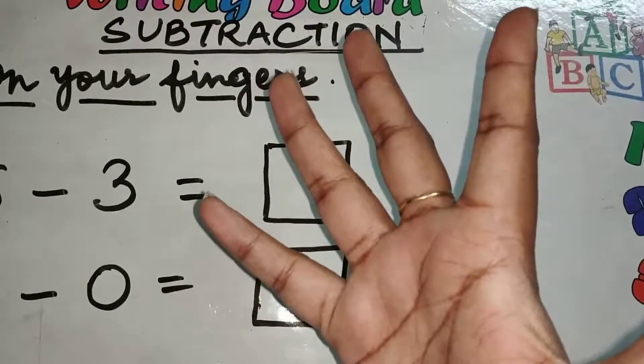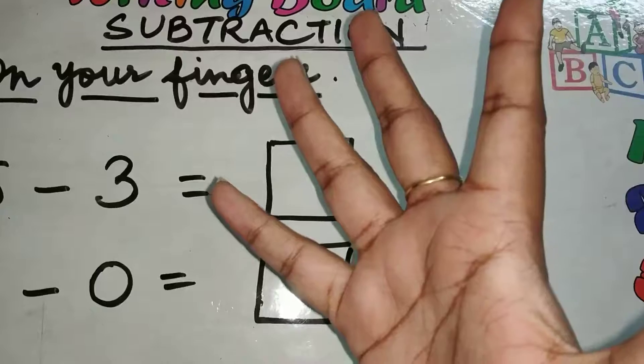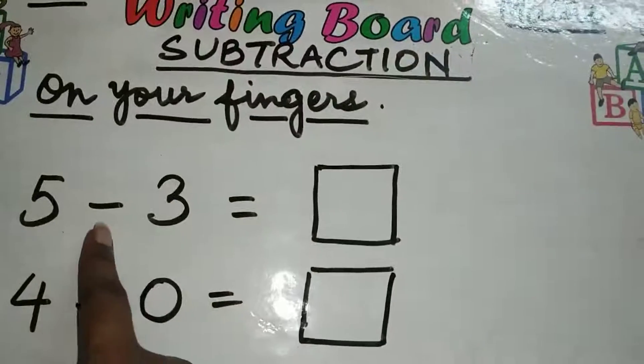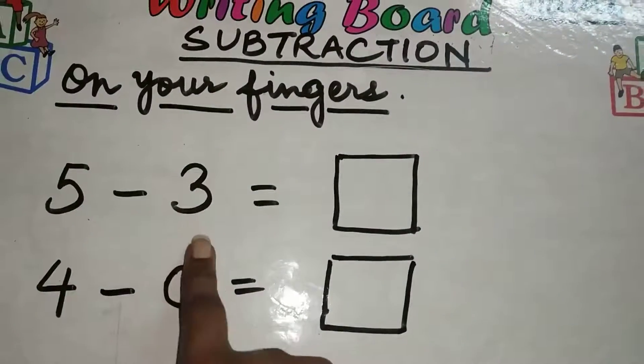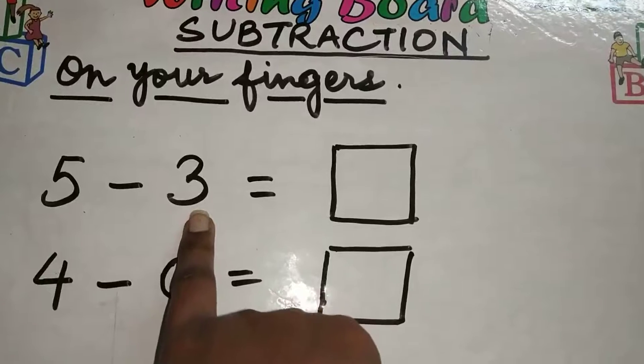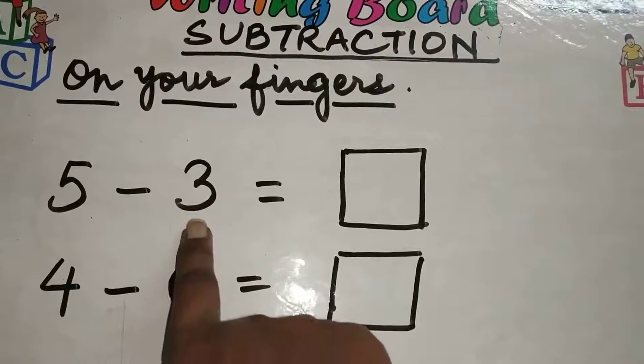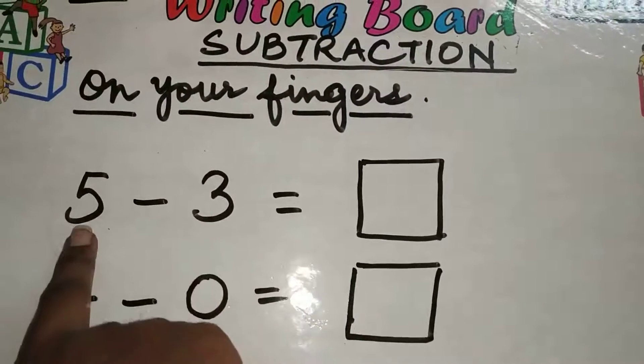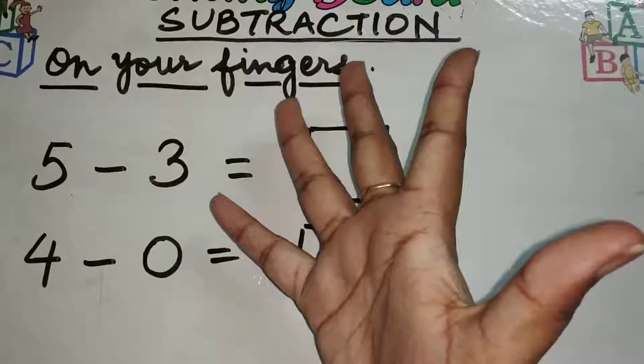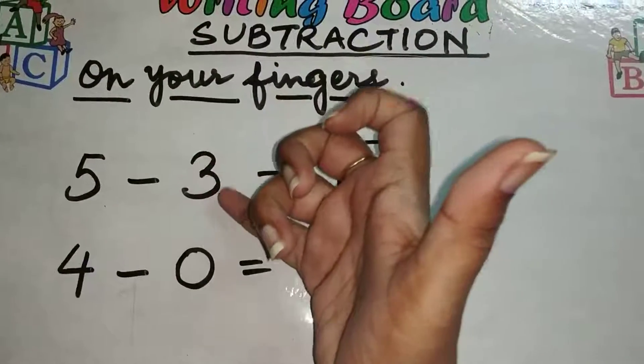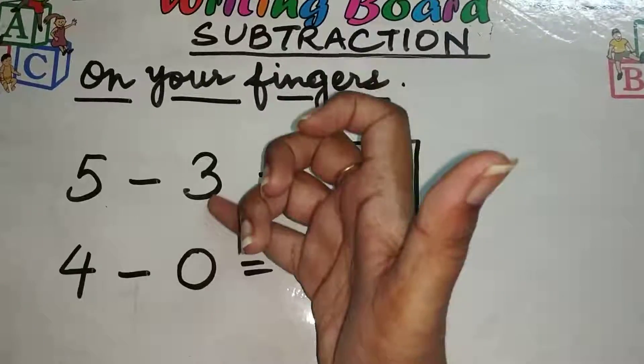Alright, then what you have to do is read the number after the minus sign. So, this is the minus sign. What is written here? Three. So, this number you have to bend. You have taken out five fingers and then you have to bend these fingers. Means three fingers.